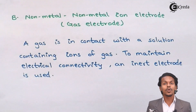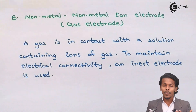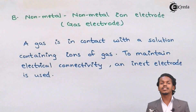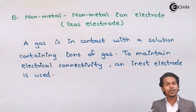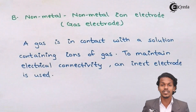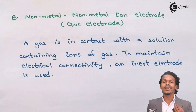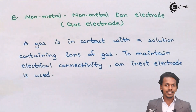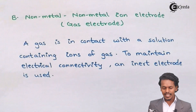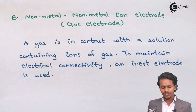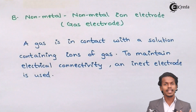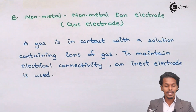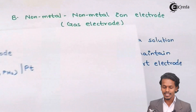Inert electrodes do not participate in the reaction, but they play a very vital role as they can deposit or absorb the gas on themselves. Platinum is typically used as the inert electrode, playing a vital role in conducting the circuit and helping in the conduction of electricity. An example is the H₂ gas electrode, or hydrogen gas electrode.